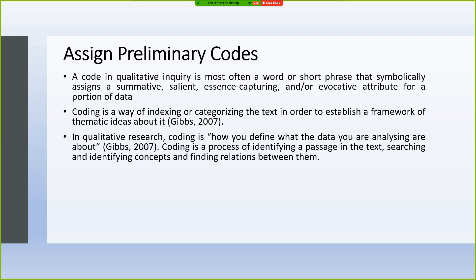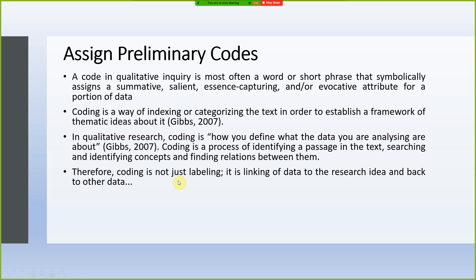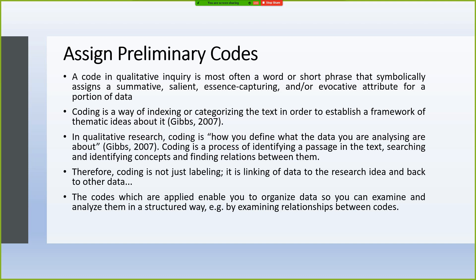In qualitative research, coding is how you define what the data you are analyzing is about. Coding is a process of identifying a passage in the text, searching and identifying concepts, and finding relationships between them. It's not just highlighting important things — coding means identifying that these passages from respondents actually relate to, say, ethical aspects of the university, or community engagement. It's about finding relationships between those passages and codes. Coding is not just labeling text; it's about linking the data to the research idea and back to the other data.